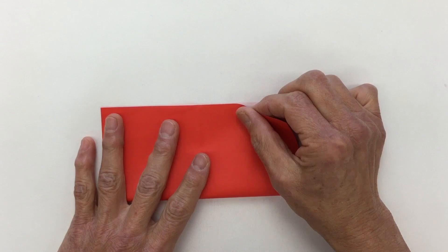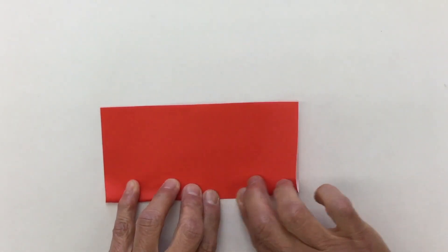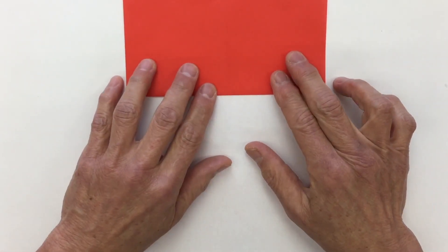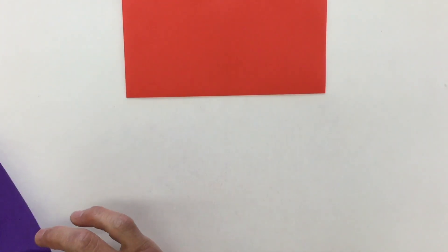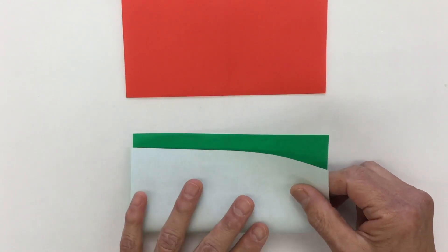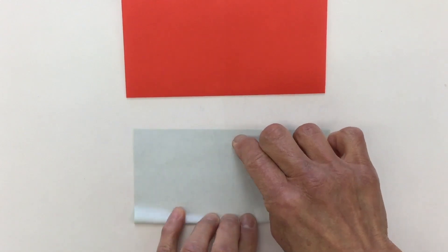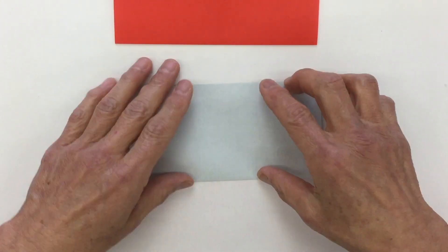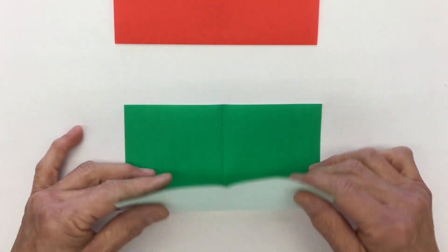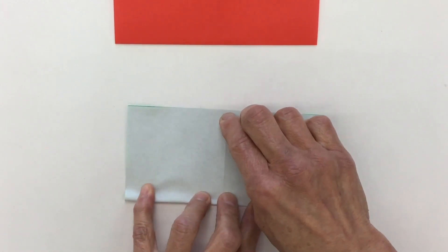Hold in place. Crease. That's your outside paper. Take your inside paper, color side up. Fold it in half exactly. Hold in place. Crease. Open, shift, fold it in half, and crease.